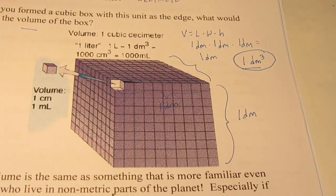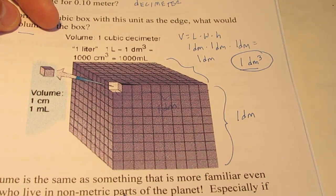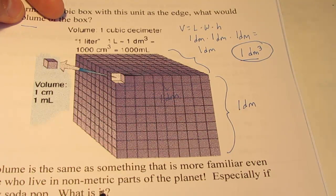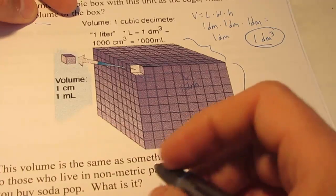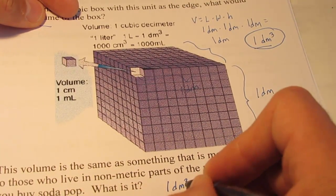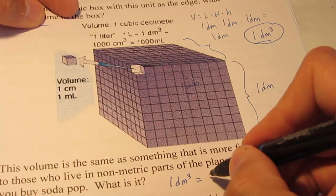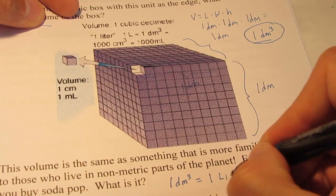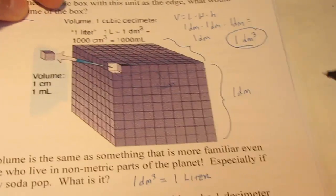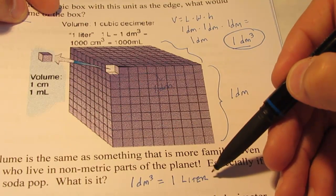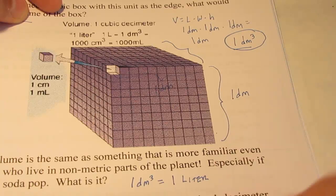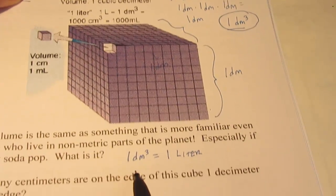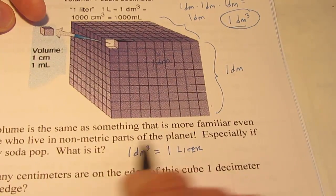Now the volume is the same as something that we're more familiar with, even to people who live in non-metric parts of the planet, especially if you buy a soda pop. It turns out that a cubic decimeter is also the same as one liter. So a liter is literally a cube that's a decimeter on each edge. We can call it a cubic decimeter, or we can call it a liter. They are the same thing.